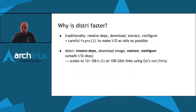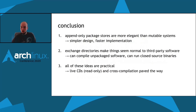So to recap, why is DISTRI so much faster? Traditionally you need to resolve dependencies, download packages, extract them, configure them, and use careful fsync calls for safe I/O. Whereas in DISTRI you don't need to resolve any dependencies — you just download images that need no extraction, have no configure step, and unsafe I/O is totally okay. DISTRI's approach scales to 12+ gigabytes per second on a 100-gigabit link, tested using just the standard library's go/net/http library. Append-only package stores are more elegant than mutable systems — they have a simpler design and faster implementation.